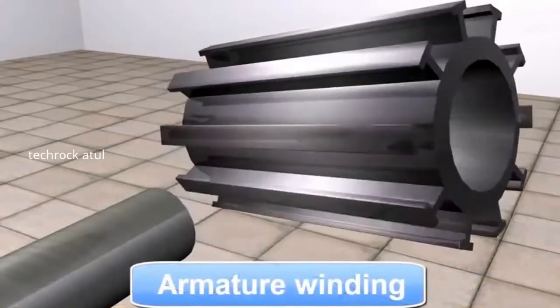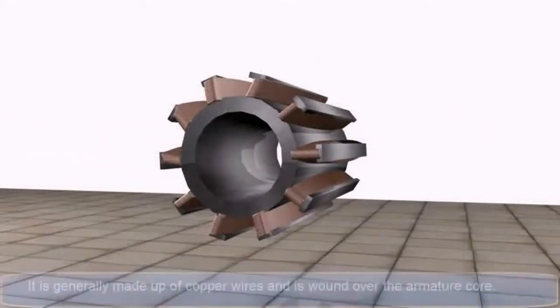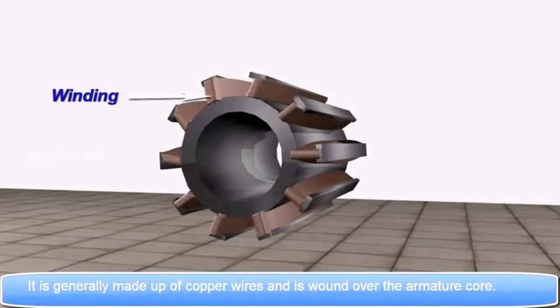Next is Armature winding. It is generally made up of copper wires and is wound over the armature core.